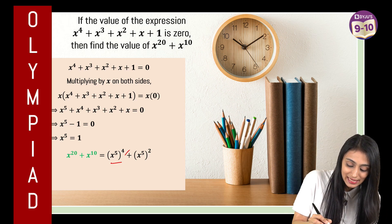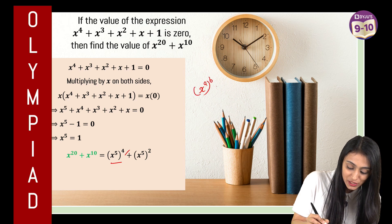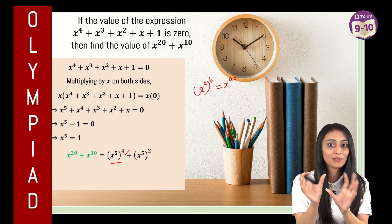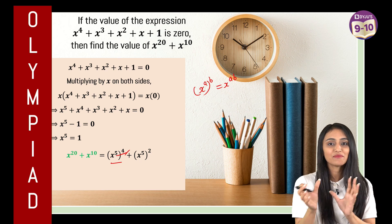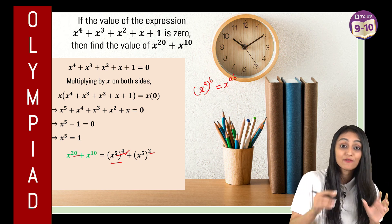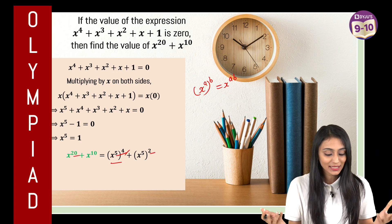we know this rule that here we have x to the power a times b, so it is going to be x to the power a b, we multiply the powers. So this is basically 5 times 4, that's 20, and this is x to the power 5 whole square, which is actually x to the power 10.